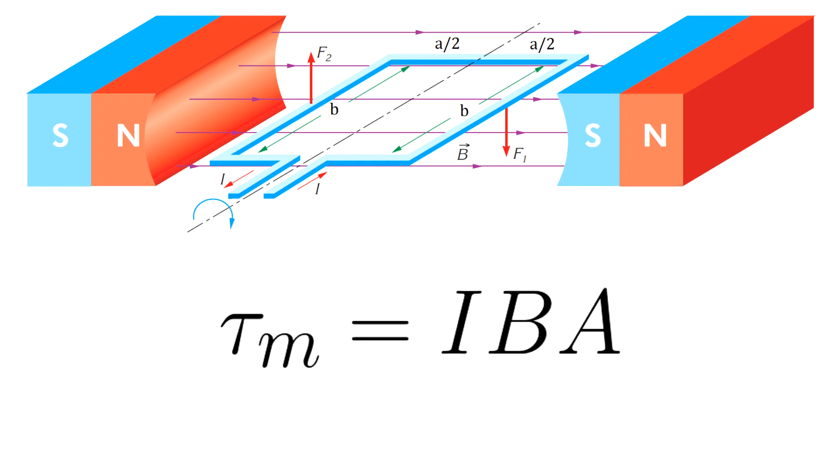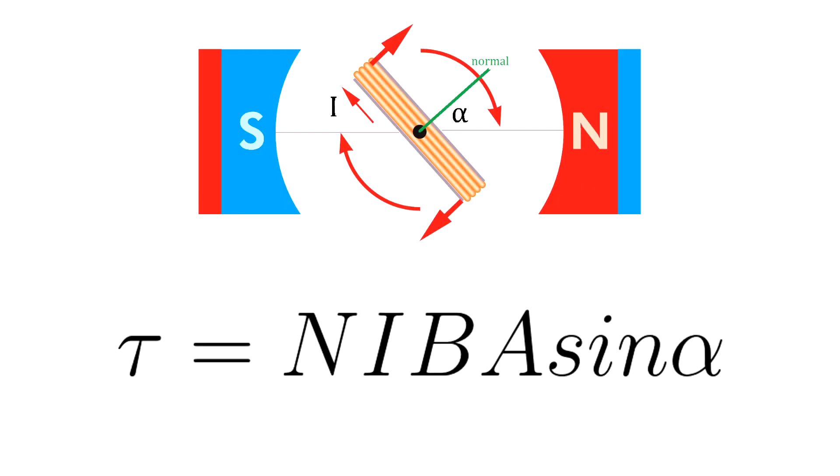We need an equation which can be valid for any position of the loop and for any amount of turns of the loop. We need a universal equation. Well, this is the universal equation.